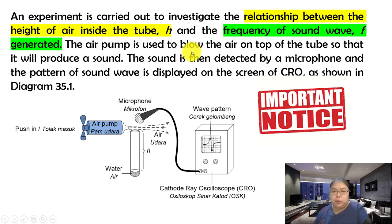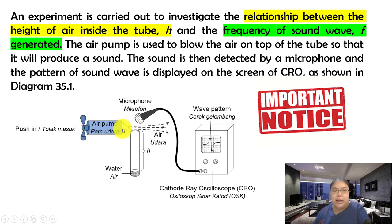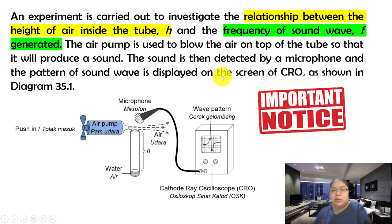An air pump is used to blow air on the top of the tube to produce sound. There is water at the base, and h stands for the height of air inside the tube. The air pump flows and pumps air through the surface of the tube to produce sound. The sound transfers to a microphone connected to a cathode ray oscilloscope (CRO), which displays the wave pattern as a diagram.